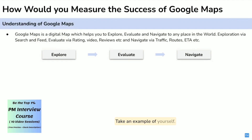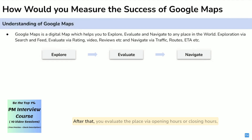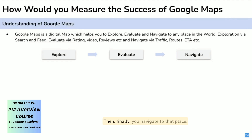Take an example of yourself. You search for some place. After that, you evaluate the place via opening hours or closing hours, busyness of the place, rating, reviews, etc. Then finally, you navigate to that place.